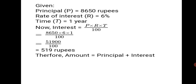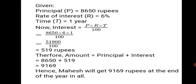Now we have to find the total amount, because the question asks how much money Mahesh will get at the end of the year in all. Using the formula: Amount equals Principal plus Interest equals 8650 plus 519 equals Rs. 9169. Hence, Mahesh will get Rs. 9169 at the end of the year in all.